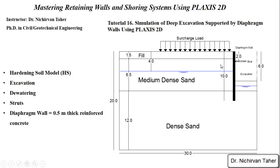You will also learn what a strut is, what kind of material and sections are used for a strut or prop, and how we can simulate this kind of support element in Plaxis 2D. The diaphragm wall is 10 meters high, our excavation will be 6 meters, so the embedded length of the diaphragm wall will be 4 meters, and the thickness of the diaphragm wall is 0.5 meters.